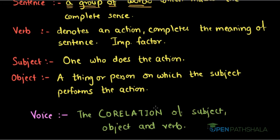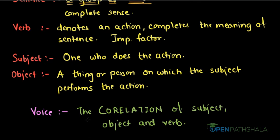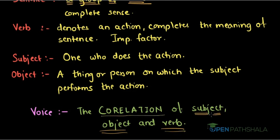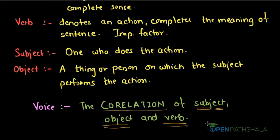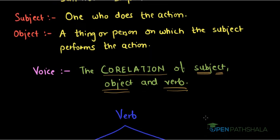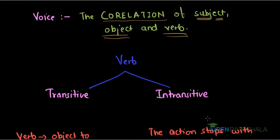So now we can move to voice. What is voice? Voice is the correlation of subject, object, and verb. Now before moving to types of voice, let us understand the types of verb.